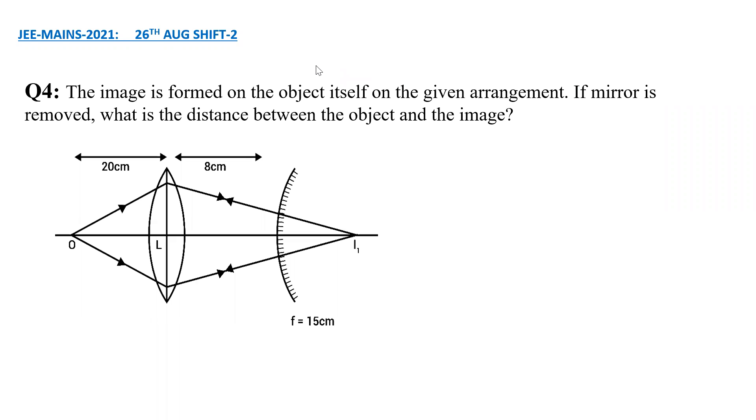Since it is being told to us that the image will be formed on the object itself when the mirror is present, as seen in the diagram, the rays might be going normal and that is why they are retracing their path and that is why the final image is falling on the object itself, which means this I1 here is nothing but center of curvature of the mirror. And therefore this distance is 2 times the focal length, which is 30. Already the pole of the lens and pole of the mirror are at a distance of 8 centimeters from each other.